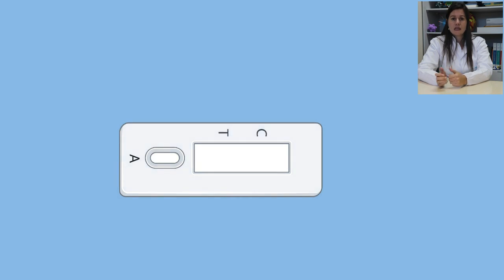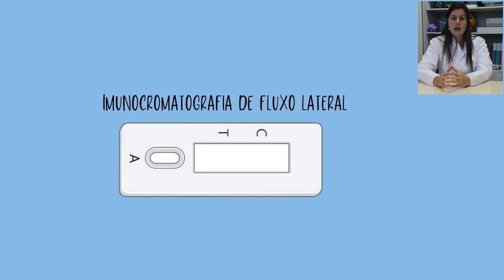Dentre os testes rápidos existentes, o teste de imunocromatografia de fluxo lateral é o mais simples, rápido e então é o mais utilizado. Esse teste utiliza uma membrana porosa e a mais utilizada, o material mais utilizado, é a membrana de nitrocelulose.